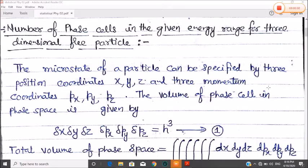In statistical mechanics, the next topic we are going to study is about further definitions and properties of phase cells and phase space. The next topic is the number of phase cells in a given energy range for a three-dimensional free particle. The microstate of a particle can be specified by three position coordinates x, y, z and three momentum coordinates px, py, pz.